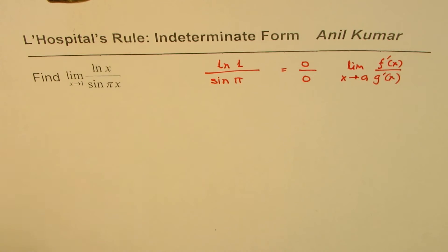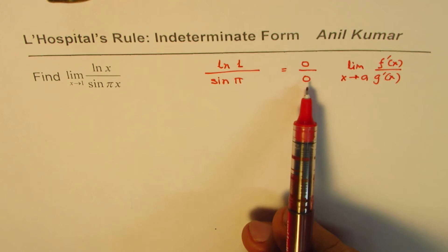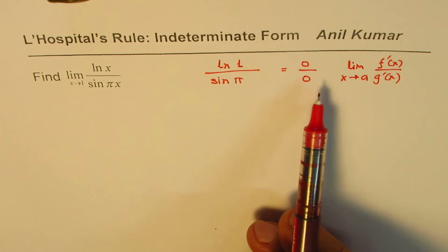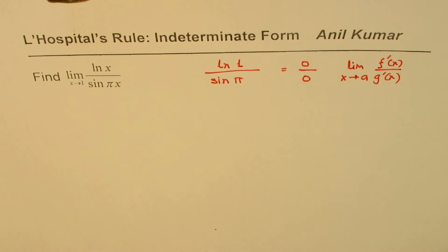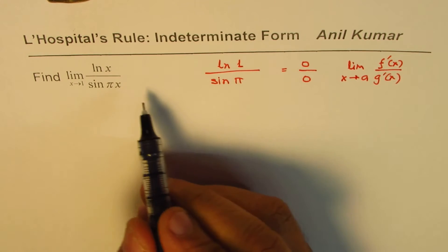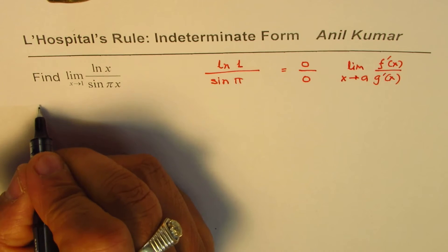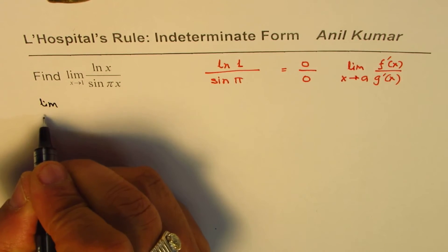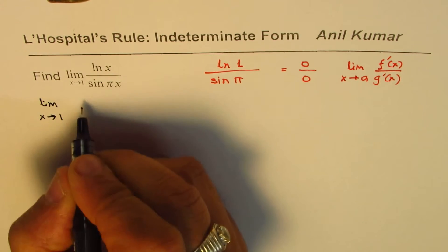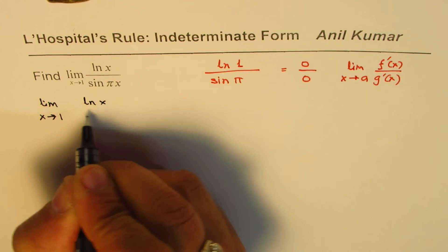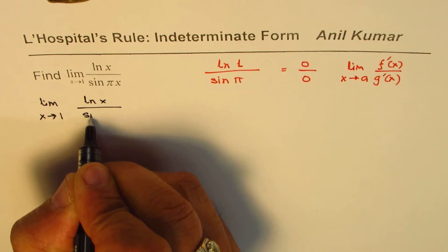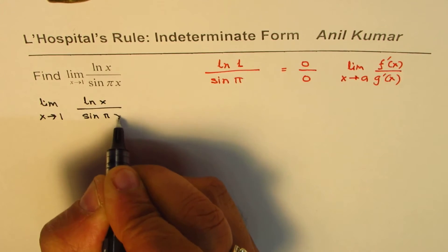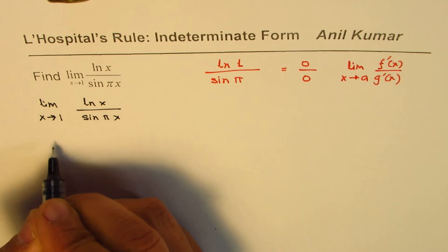their derivatives. That is L'Hopital's rule. If we have an indeterminate form—there are different kinds of indeterminate forms; we'll deal with 0 over 0 in this particular example—since we can apply this rule, let's do it. So we have limit x approaches 1, ln x over sine π x. Now, derivative of ln x